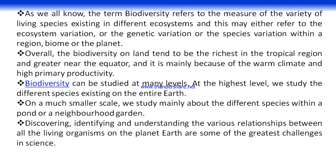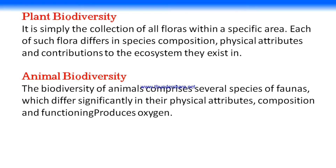The distribution of animals and the distribution of plants is called biodiversity, which is distinguished into two terms: plant diversity and animal diversity. Plant diversity is simply the collection of floras — plants are otherwise known as floras — within a specific area or environment. Each flora differs in species composition, physical attributes, and contributions to the ecosystem in which they exist.